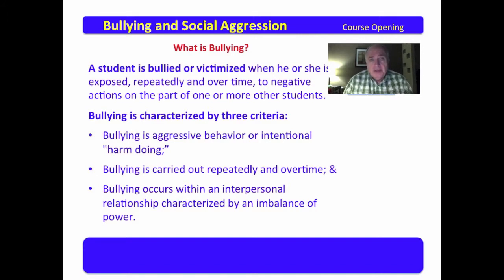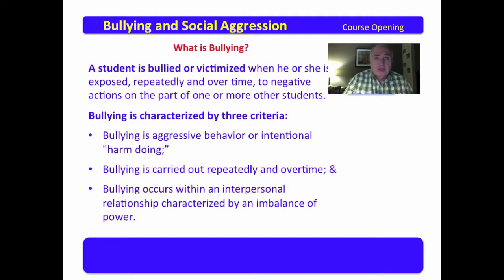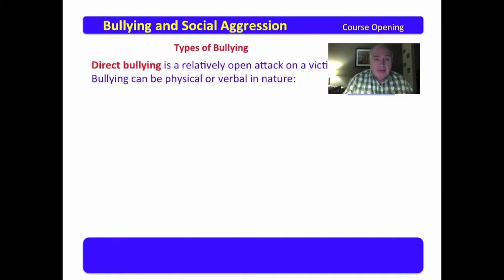Bullying can occur in school, on the job, in the family, at church, at a mosque. Bullying occurs when there is intentional harm-doing that is repeated behavior conducted over time, and it occurs in interpersonal relationships characterized by an imbalance of power.